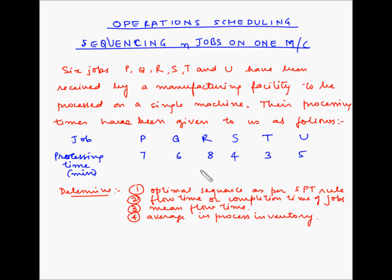The shortest processing time method is a priority rule where sequencing is based on the processing time of the jobs. The job with the shortest processing time is scheduled first. The remaining jobs are then sequenced according to their processing time lengths, so the job with the maximum processing time is scheduled at the end of the sequence.